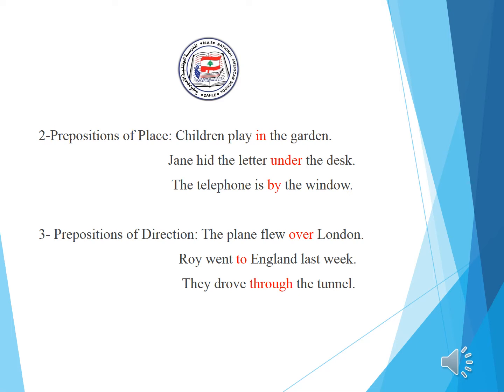Now the following sentences have prepositions of direction. 'The plane flew over London.' Over shows the direction the plane took. 'Roy went to England last week.' To shows Roy's destination. 'They drove through the tunnel.' Through shows the way they took to reach a certain place.